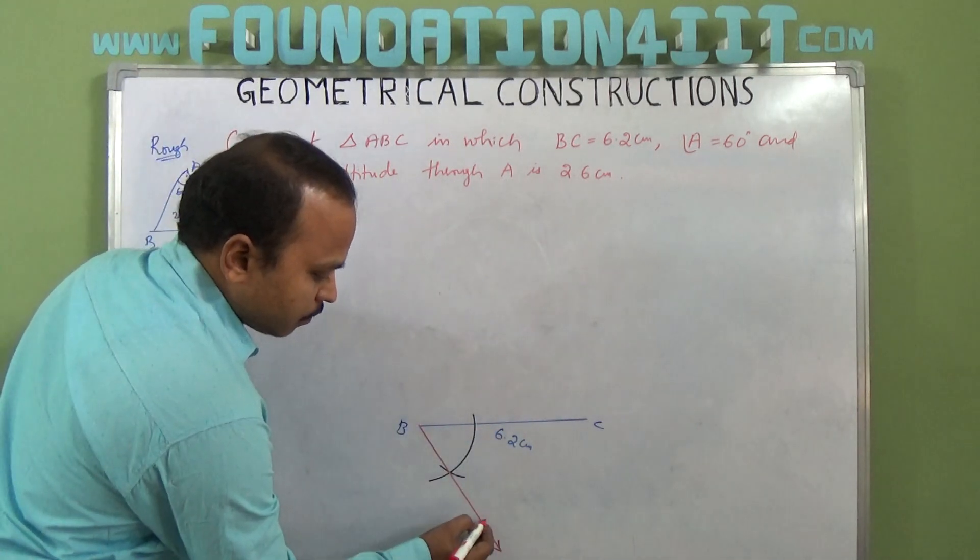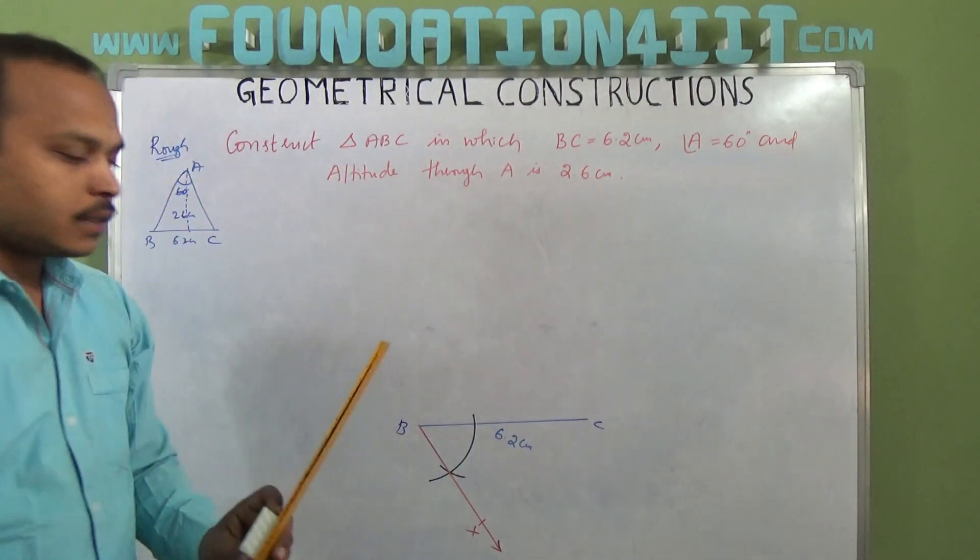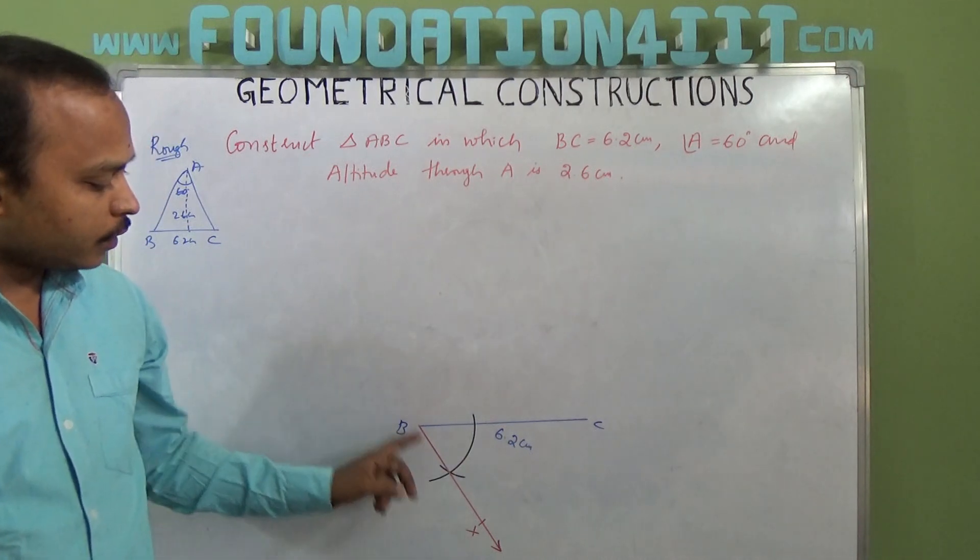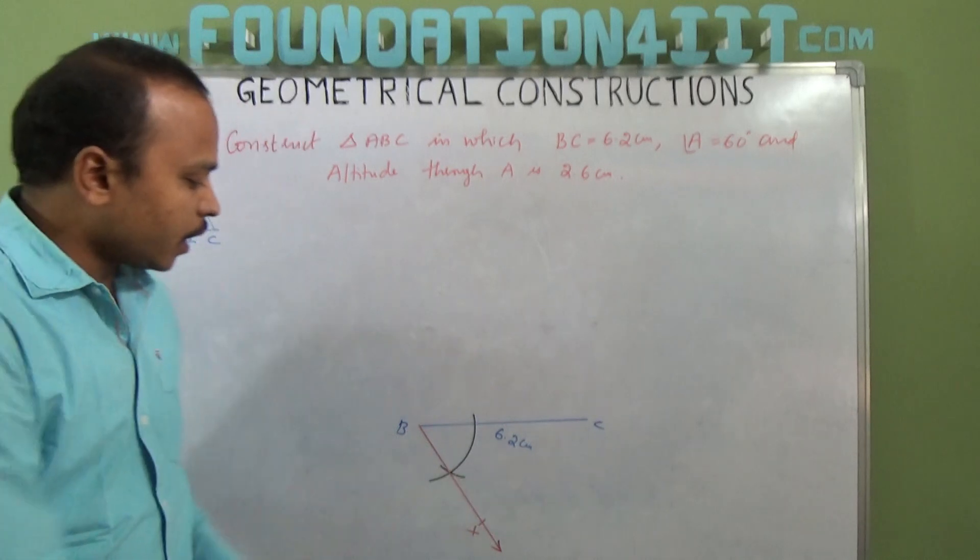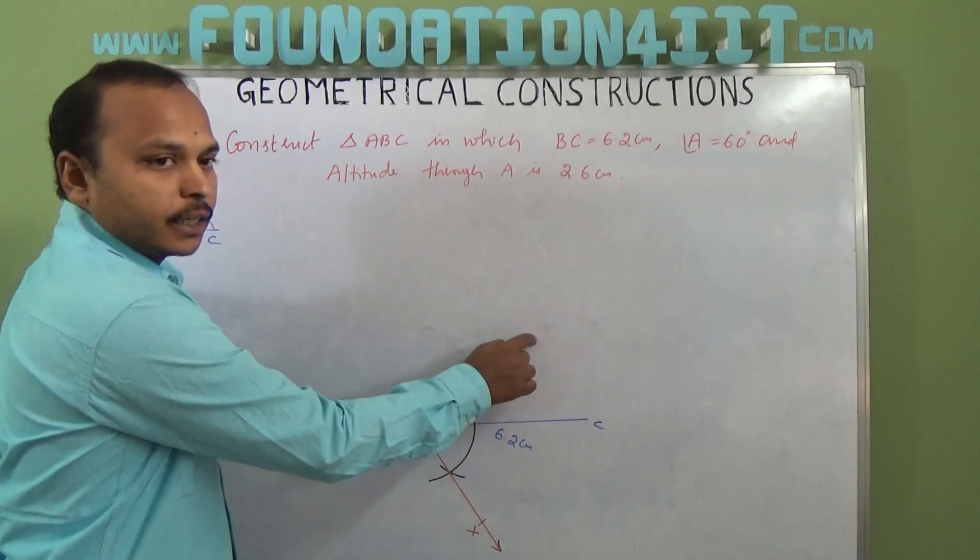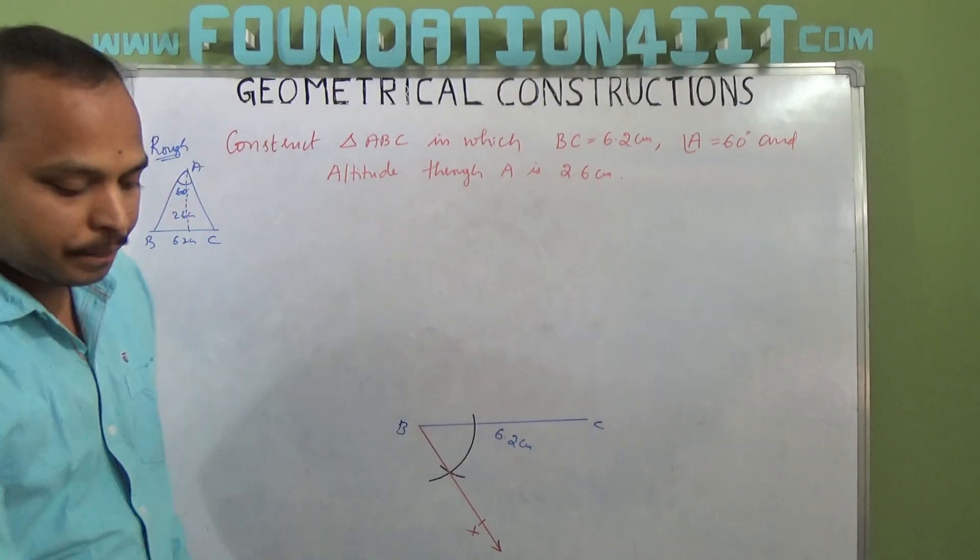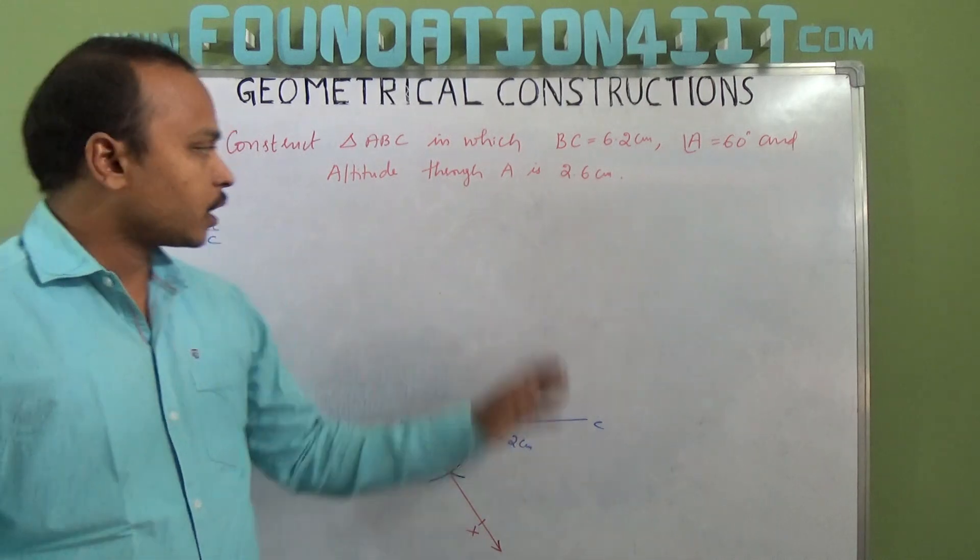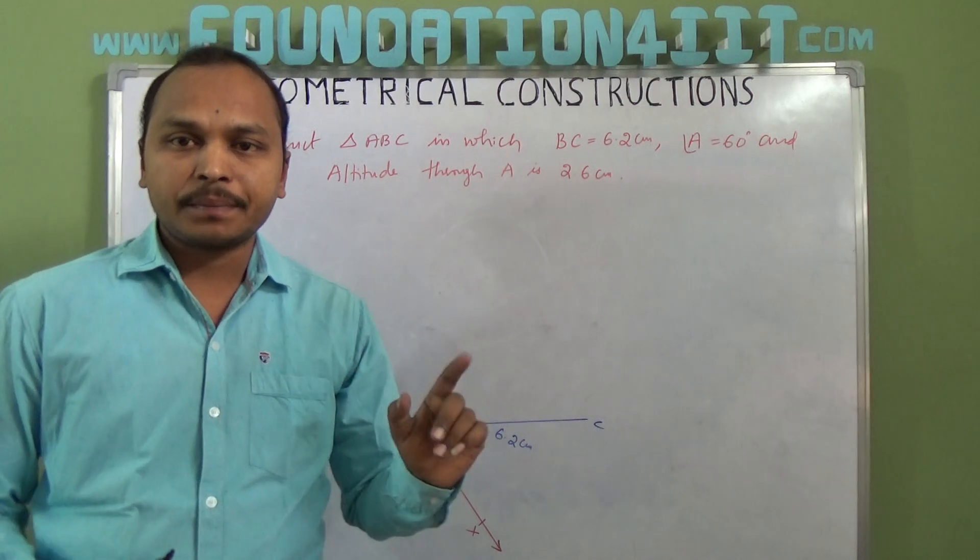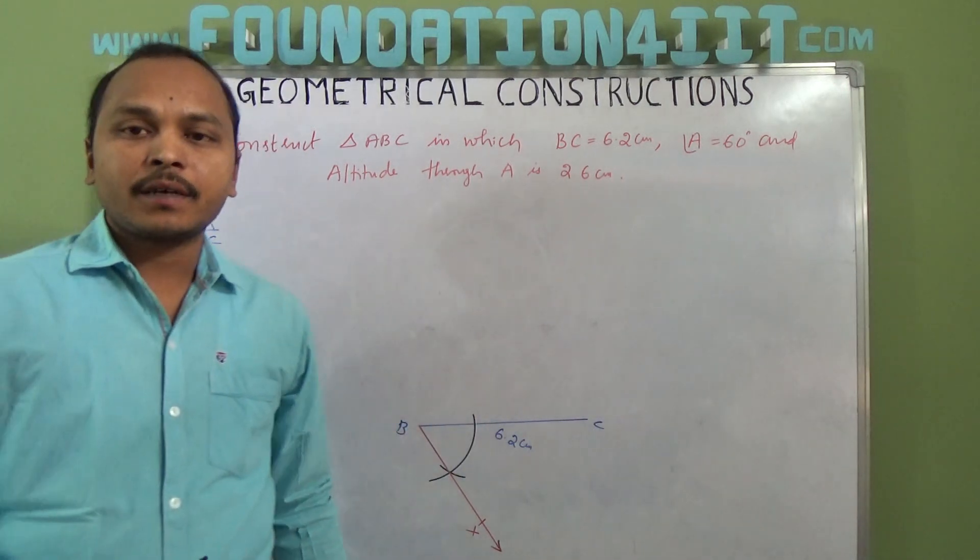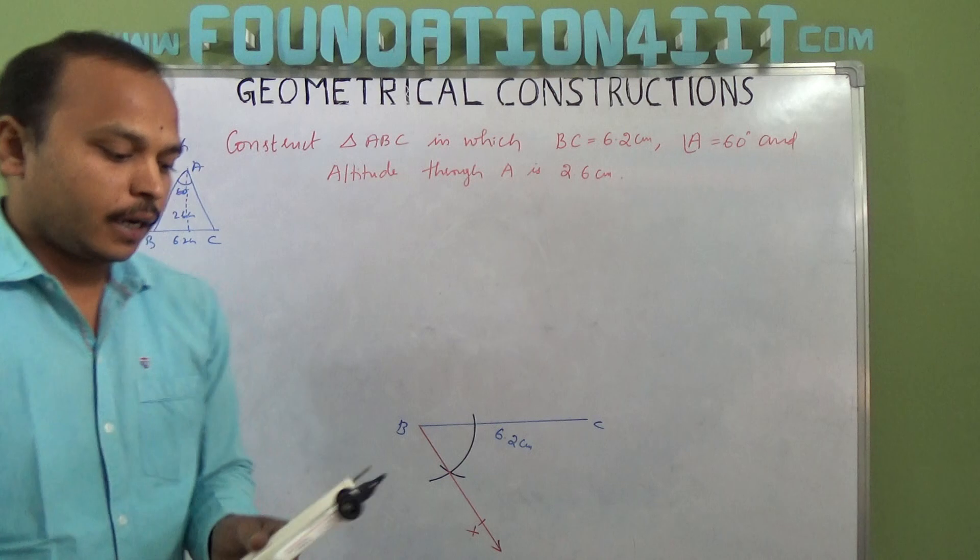Let's call this line BX. Angle XBC is 60 degrees. Now for this BX we need to draw a perpendicular line. That means indirectly at point B we need 30 degrees, because 60 plus 30 equals 90. For BX, whatever vertical angle is given, we should construct downwards first. Now for this line segment we need to draw a perpendicular line.